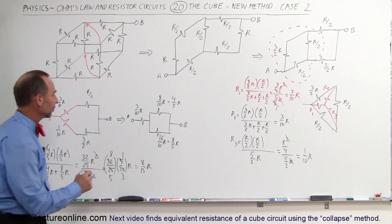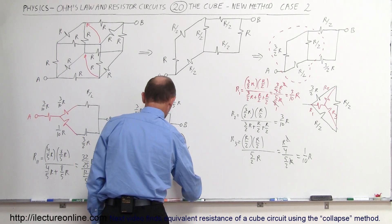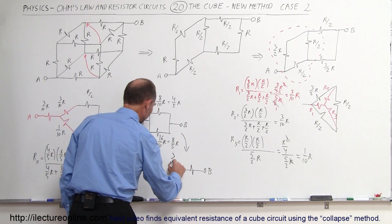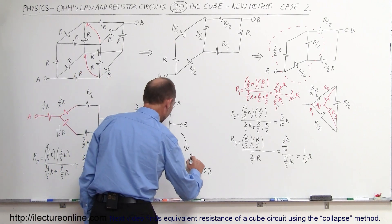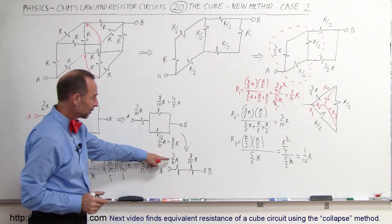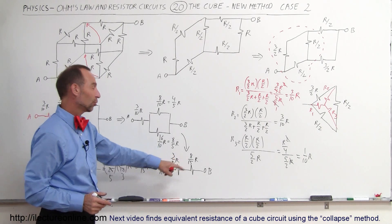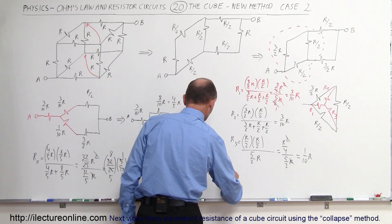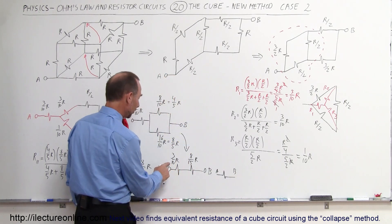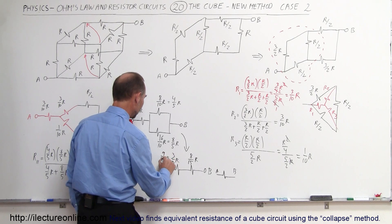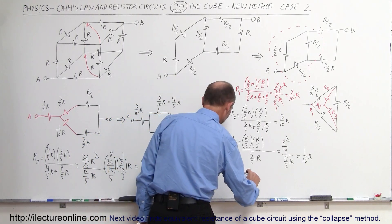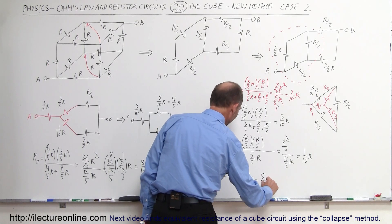This equivalent circuit now becomes a first resistor and a second resistor from A to B. The first resistor is still 3/10 R, and the second becomes 8/15 R. Since they're in series, we add them together using a common denominator of 30: that's 9/30 R plus 16/30 R, giving 25/30 R, which is the same as 5/6 R.